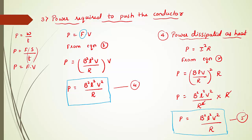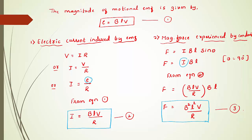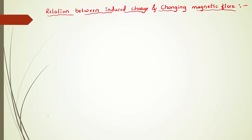When the magnet moves toward the coil, extra work must be done against the repulsive force — so the power required to push the conductor is B²l²v²/R. As the magnet moves, the changing magnetic field induces an EMF. Before that, when the magnet approaches the coil, a magnetic force is experienced by the conductor given by B²l²v/R. When the conductor experiences this magnetic force, the induced EMF produces an electric current given by i = Blv/R.